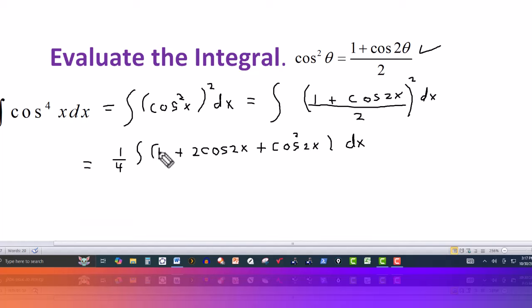The one can be integrated easily. Now that we have cosine to the first that can be integrated easily. But now we have another, we still have a cosine squared here. So I have to apply this formula up here a second time.